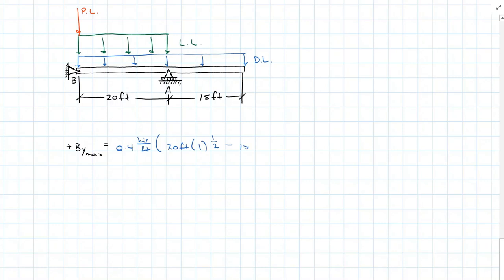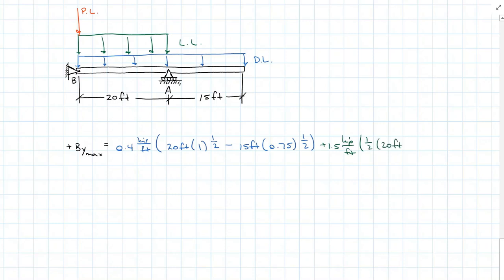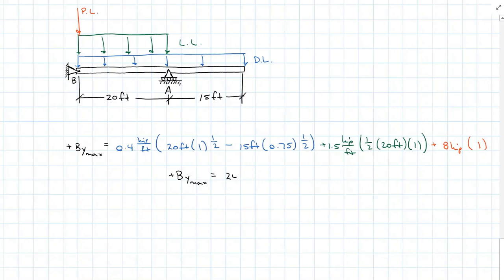That's how much the dead load influences B_Y. The live load is only over the positive area: 1.5 kilopounds per foot acting over one half of base times height. The point load is the full 8 kilopounds, and the maximum value influencing B_Y is 1. Solving this out, my positive maximum vertical reaction B_Y is 24.75 kilopounds acting up.